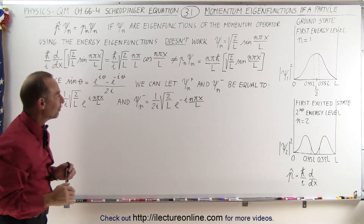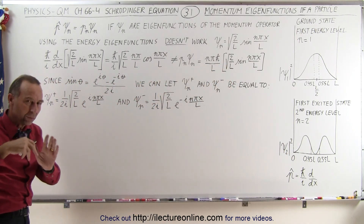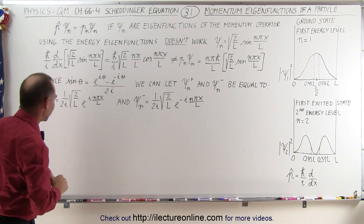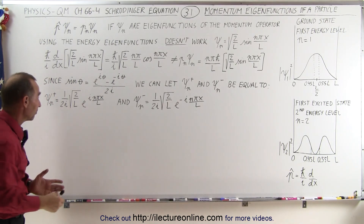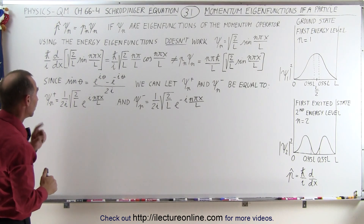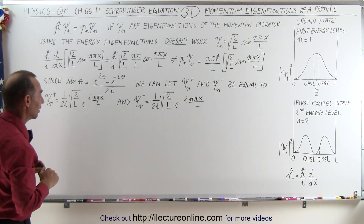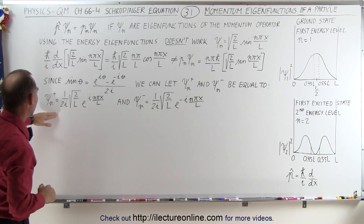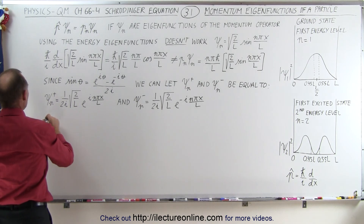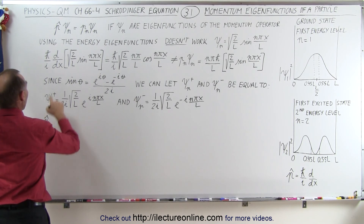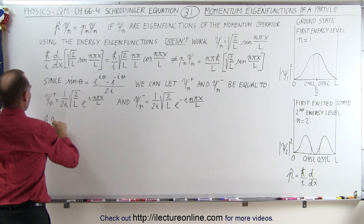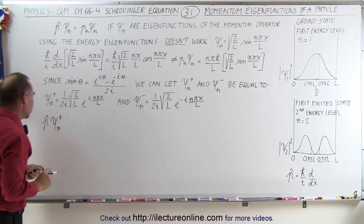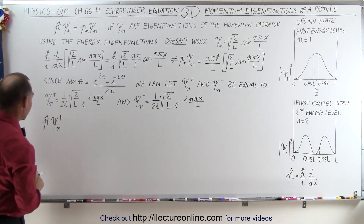That takes a little bit of forethought, but when we take the derivative we should be able to get the product of the eigenvalue with the eigenfunction back. Let's see if we picked the right value, and then we'll work our way backwards to see how that was done — you may look at that and wonder where those numbers came from. So we're going to take the momentum operator and operate on the positive eigenfunction, the presumed positive momentum eigenfunction.